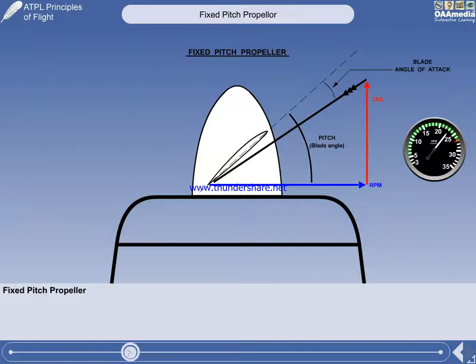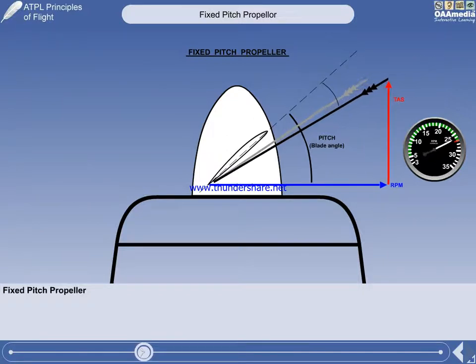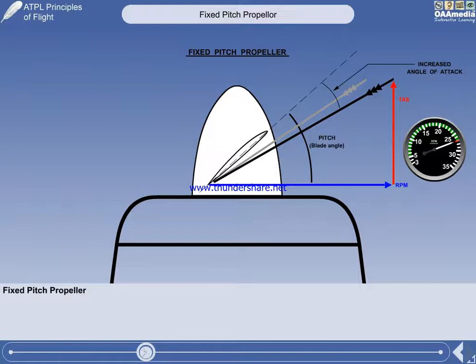We will now vary the engine RPM to see how the blade angle of attack is affected. 2300 is a typical cruise RPM. As the engine RPM is increased, the angle of attack of the blade increases.